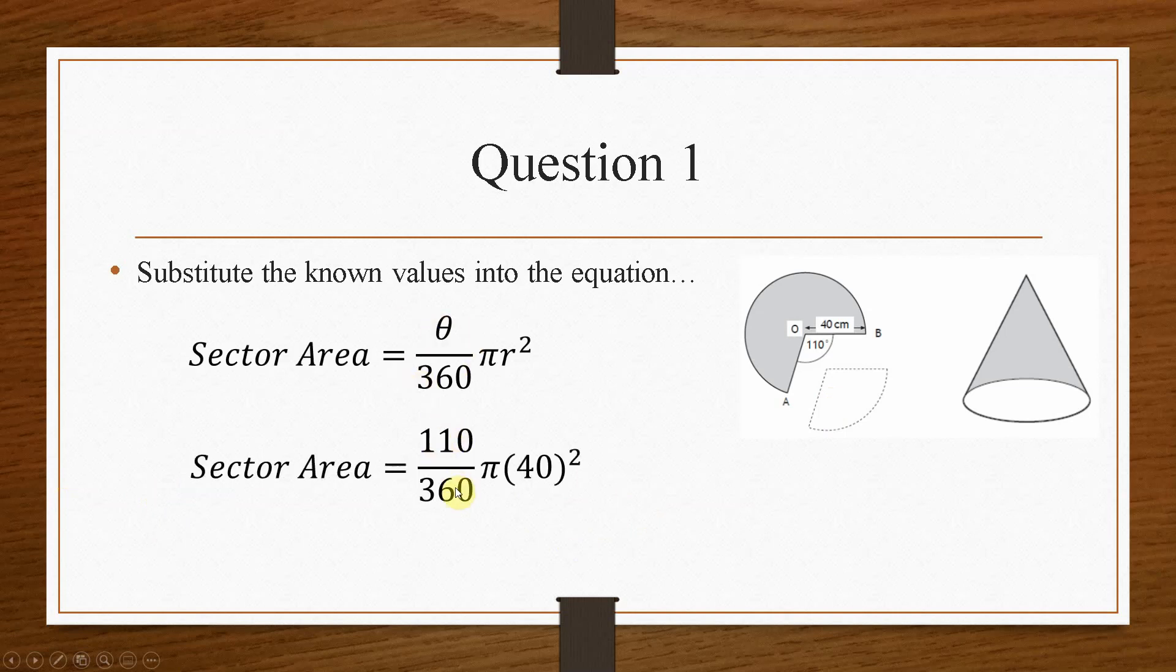So all we have to do is substitute the values into this equation, and we get 110 over 360 pi 40 squared. If you pop that into the calculator, you will get a value of 1536 centimeters squared, and it's very important for the units.